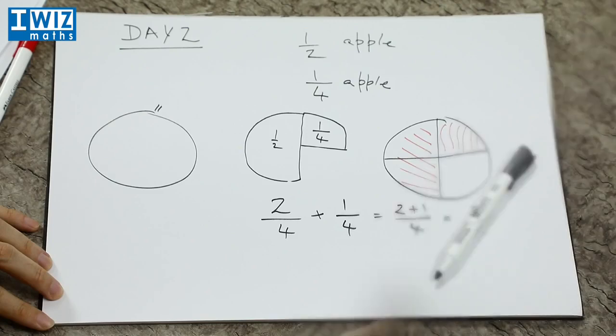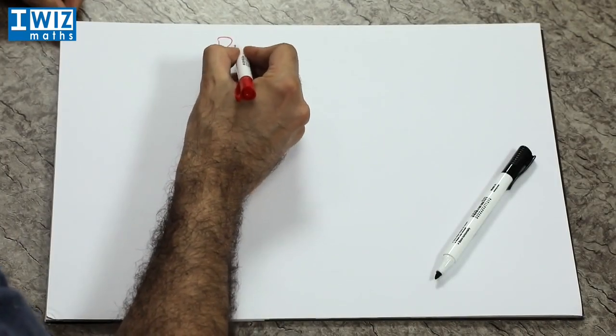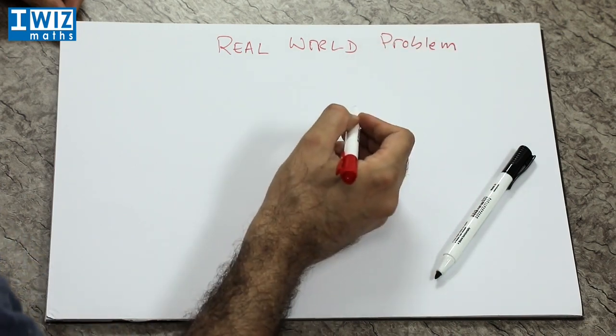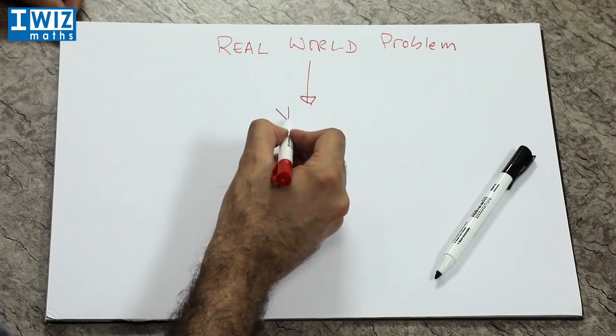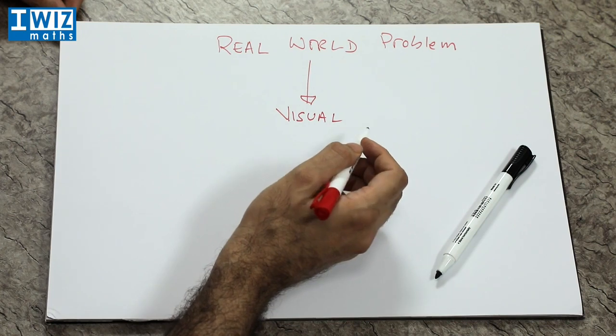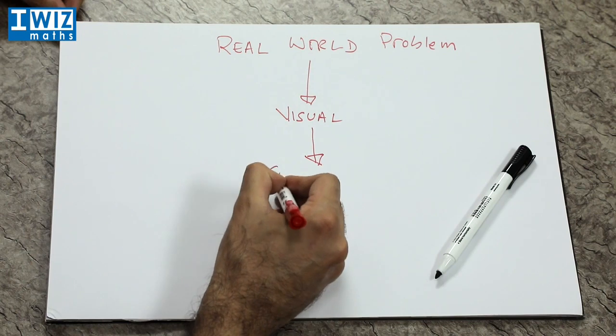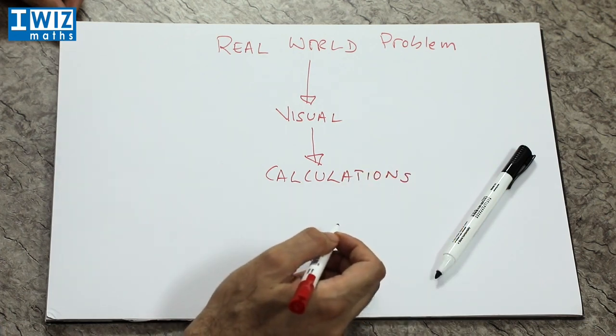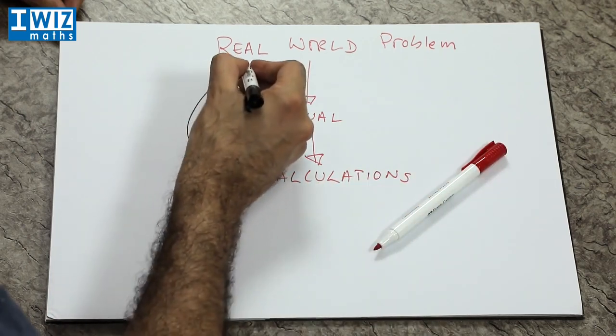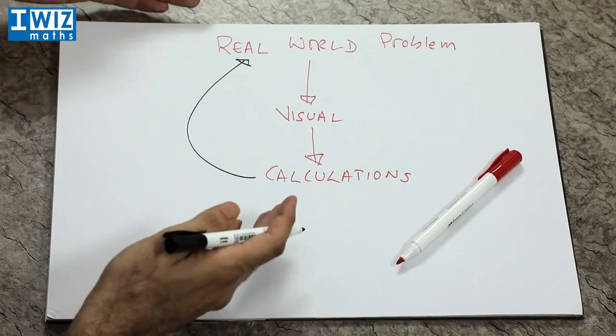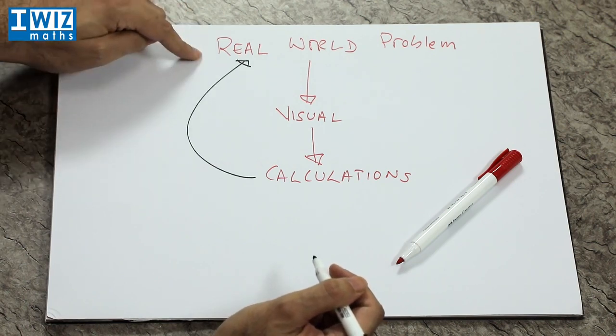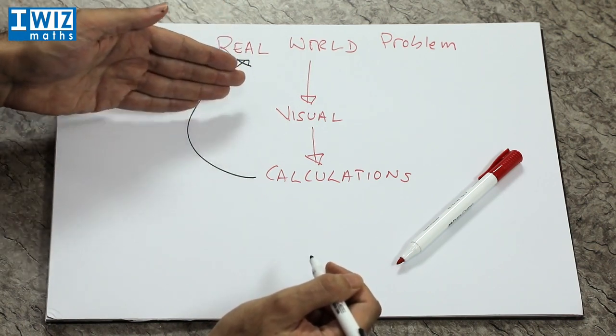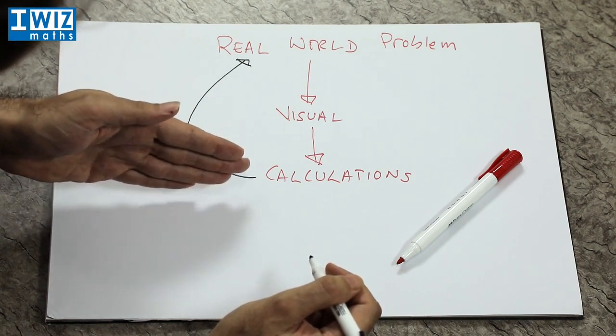What we've essentially done is started with a real-world problem, and then we constructed a visual representation of that particular problem. And from there we were able to do some analysis and some calculations in order to deduce or basically get the answer to the question that we posed from the real world. So this way of introducing concepts can be quite useful for children, where you actually start with a real-world problem or statement. If possible, show them a visual representation of it, and then go ahead and do the calculations associated with the problem that was actually posed.